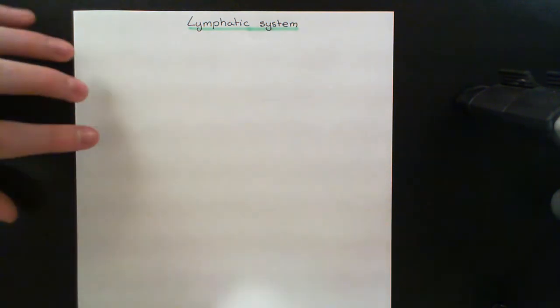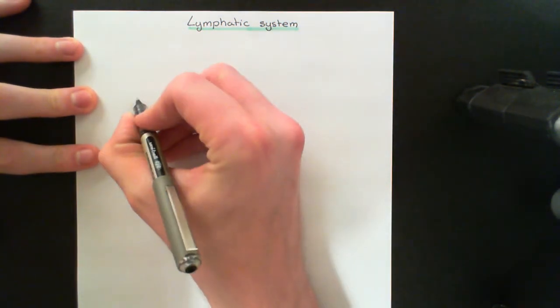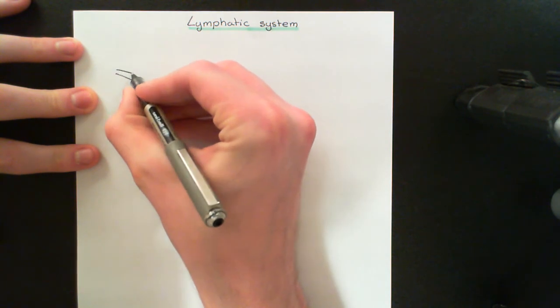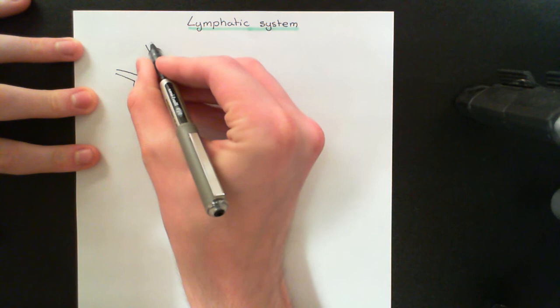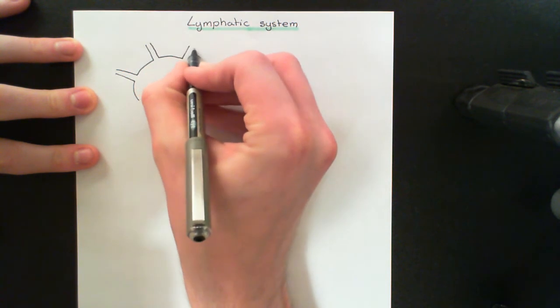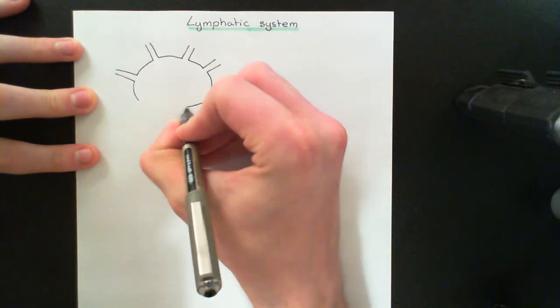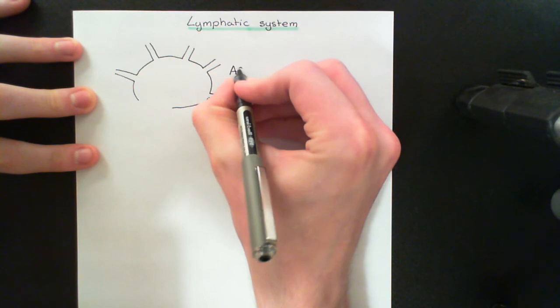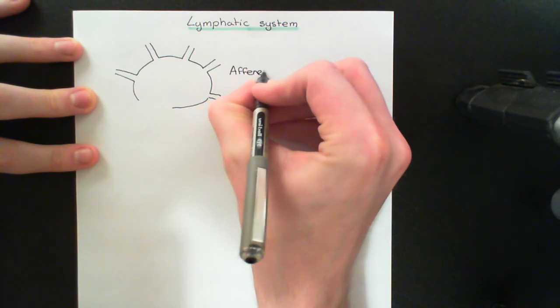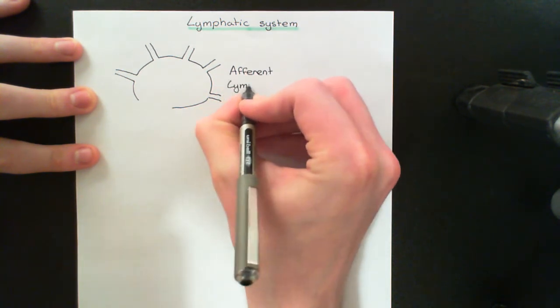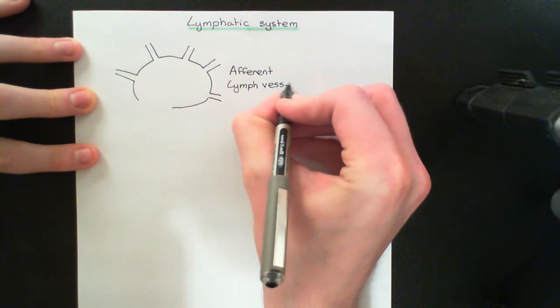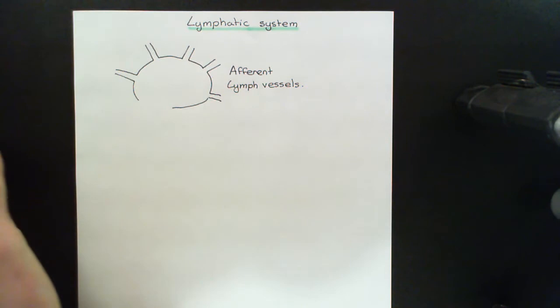They are continuously on the lookout for the presence of something nasty in the tissue fluid that is coming to them. Let me make this more clear by drawing a picture of a lymph node. So here is a picture of a lymph node. We're going to have lots of lymphatic vessels draining into the lymph node. The fancy word for these is that they are the afferent lymphatic vessels — afferent just means coming into, so these are the vessels that are coming into the lymph node.